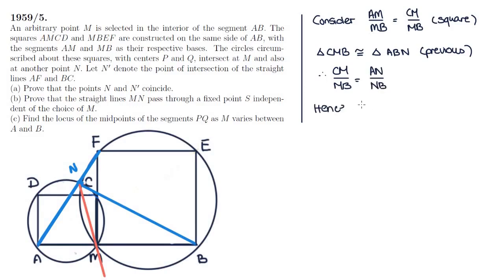Therefore, AM over MB, which is equal to CM over MB, must also be equal to AN over NB. This relationship here should look very familiar to us. It should bring to mind the angle bisector theorem, which states that the angle bisector of a triangle divides that angle's opposite side into segments proportional to the other sides of the triangle.